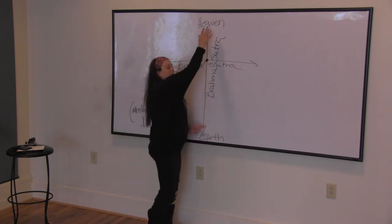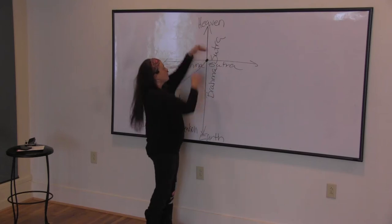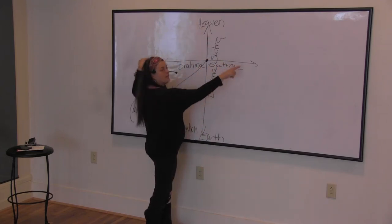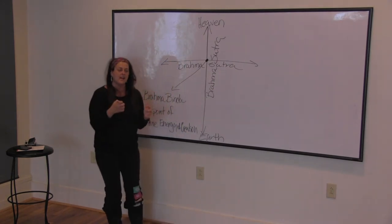These lines of energy are continual. In the body, you'll feel it as part of the Susumna, where the chakras line up. But this Brahma Sutra goes infinitely in either direction. So this cross that you hear me talk about in classes.